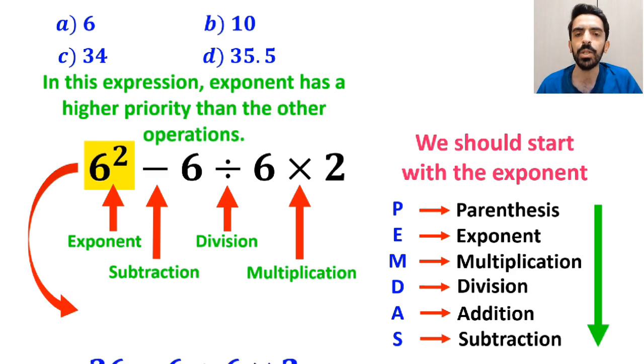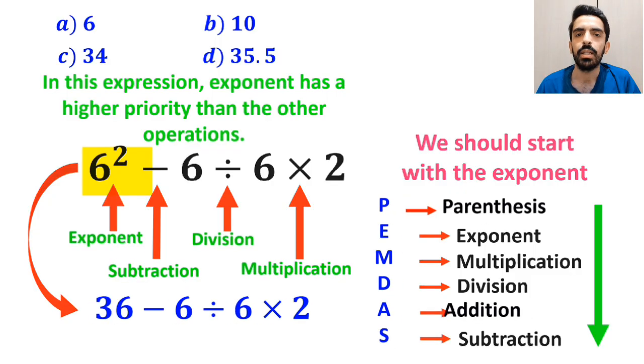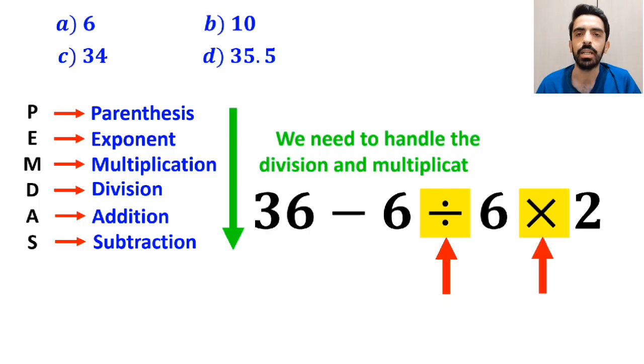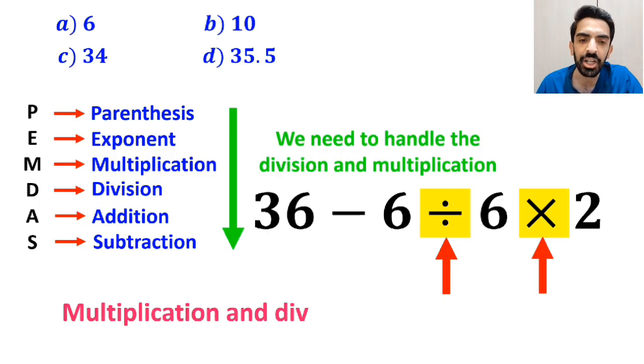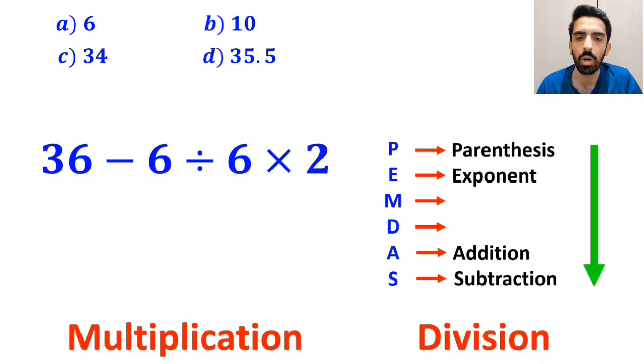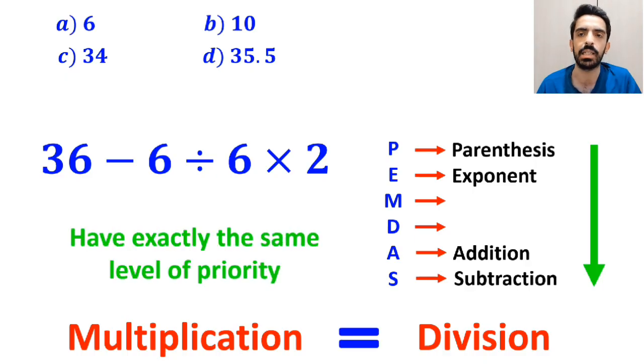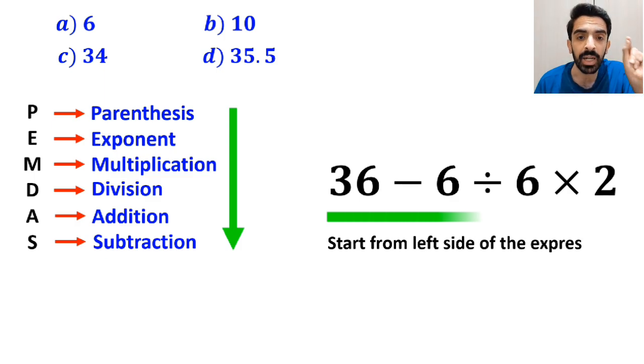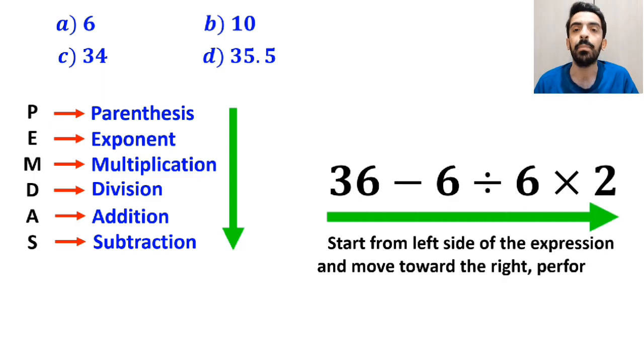So this expression simplifies to 36 minus 6 divided by 6 times 2. In the next step, we need to handle the division and multiplication, since multiplication and division have higher priority than subtraction. However, it is very important to note that in PEMDAS, multiplication and division have exactly the same level of priority. In this situation, the best thing to do is to start from the left side of the expression and move toward the right, performing division and multiplication in order.